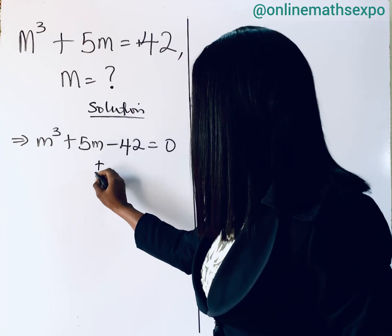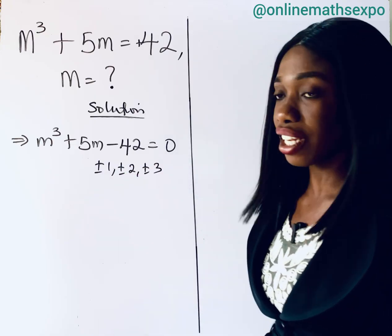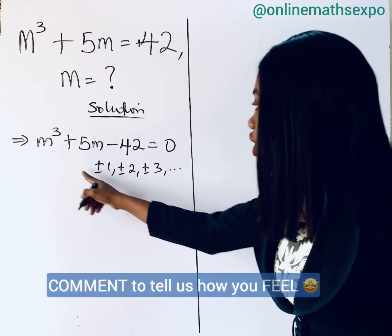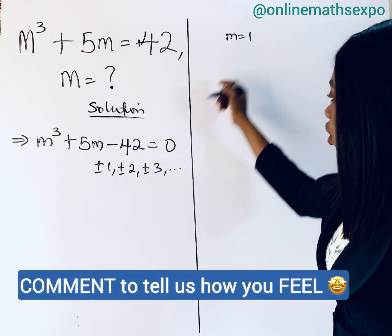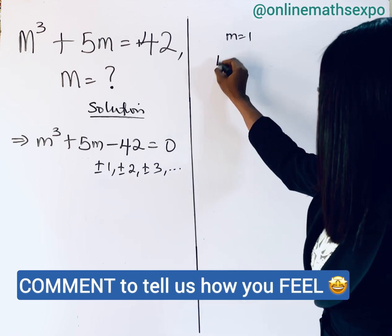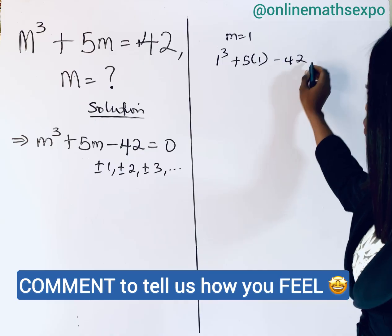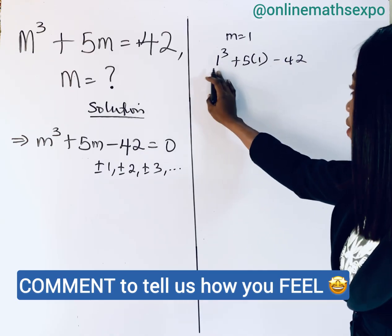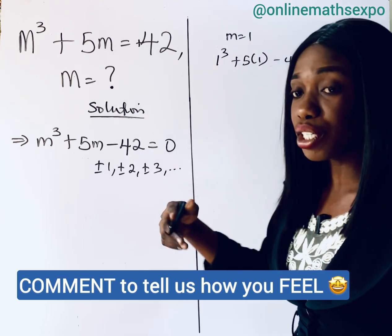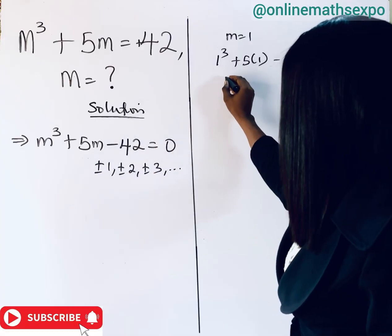Since 42 is negative, we consider both positive and negative factors: ±1, ±2, ±3, and so on. Let's test m = 1: substituting gives 1³ + 5(1) − 42, which does not equal zero. So m = 1 is not a solution.